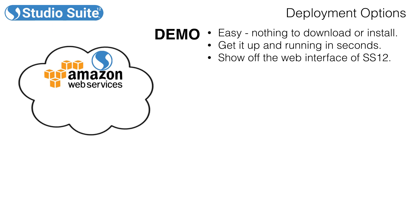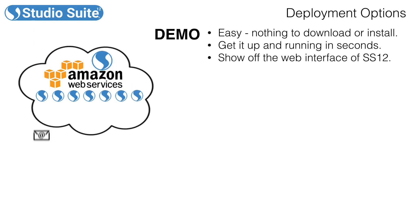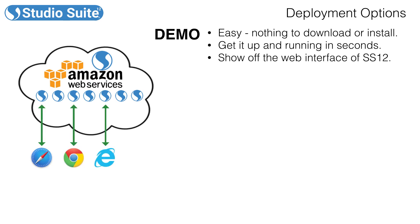Whenever someone signs up for a demo, we make a copy of that file and give it a unique name, and we do this for everyone that requests the demo. Then we email you a link to your unique file. Clicking on the link will launch your copy of Studio Suite in Safari, Chrome, or Explorer as the case may be, and we call this Studio Suite Direct.